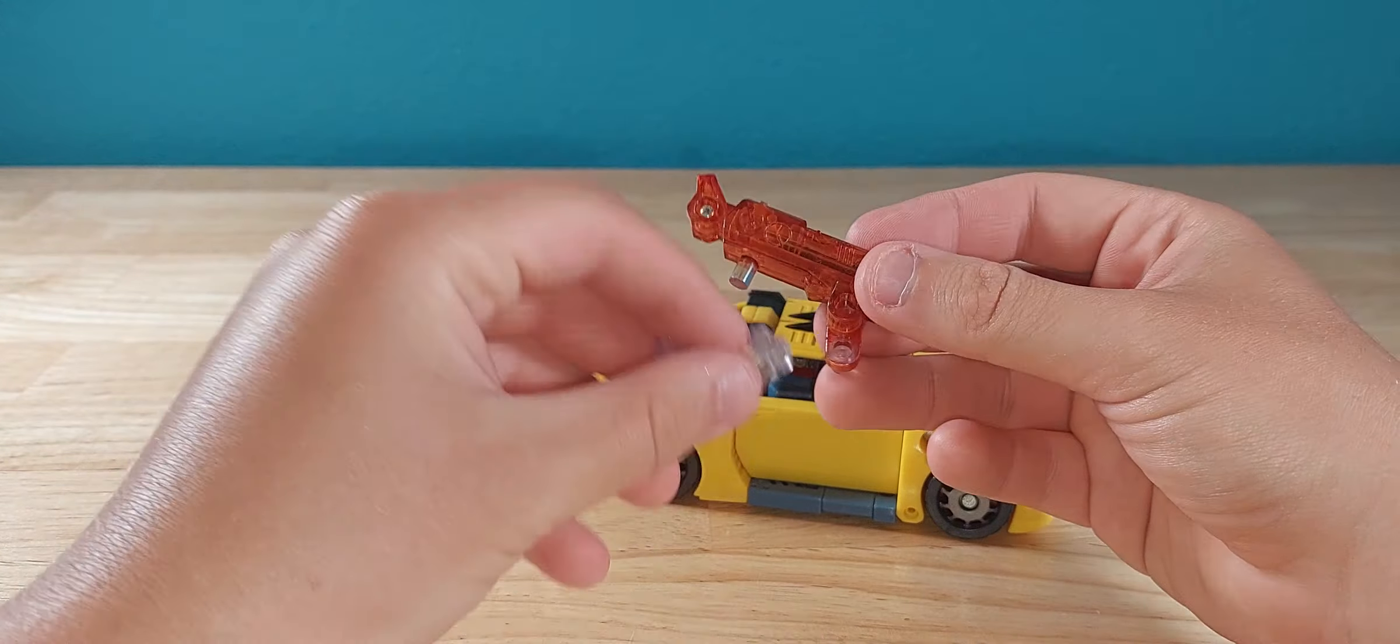Anyways, for transformation you want to go ahead and just remove this, set it off to the side, and you want to flip these back. Take these blue sections, flip them up, and extend the legs. Now you can extend them, that's the first click. The second click is that far, and I think it works better for the proportions.